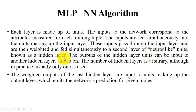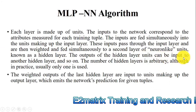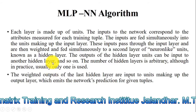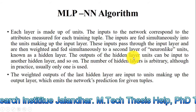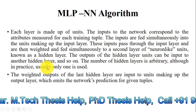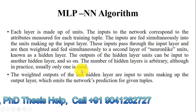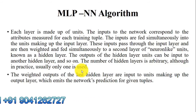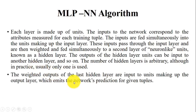The second layer is known as the hidden layer. In the input layer we have the attributes of a tuple, and those instances are simultaneously weighted and fed to the hidden layer. The output of the hidden layer units can be input to another hidden layer, and this process continues iteratively. The number of hidden layers is arbitrary, although in practice usually only one is used.